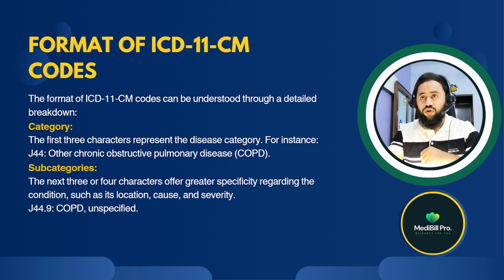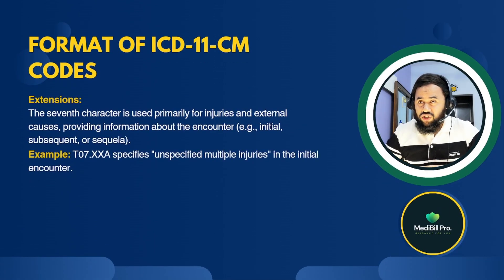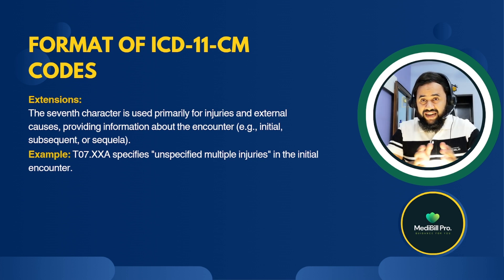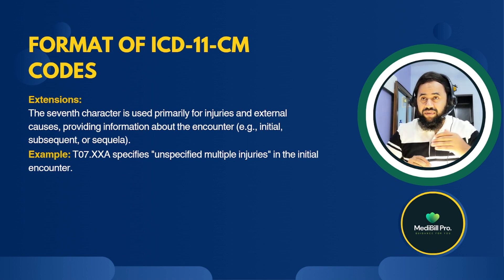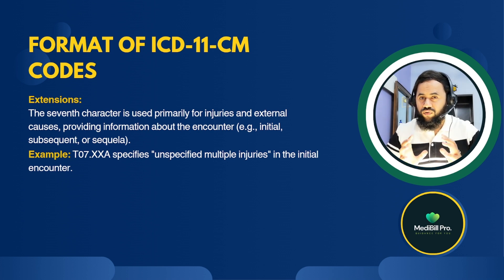There are also extensions: the seventh character is used primarily for injuries and external causes, providing information about the encounter — initial, subsequent, or sequela. For example, the code T07.XXA means 'Unspecified multiple injuries, initial encounter,' which has six characters: T07.XXA. This is the basic format of ICD-11-CM codes.